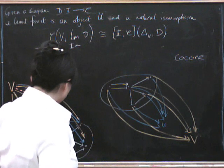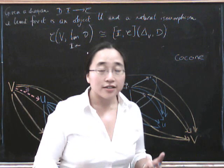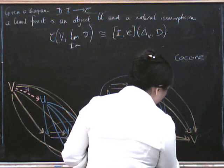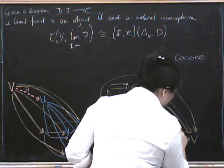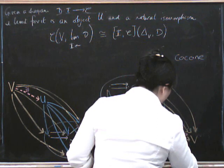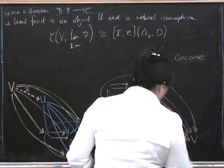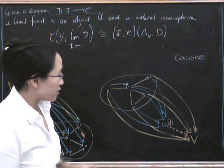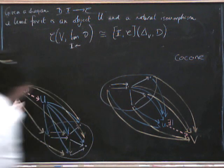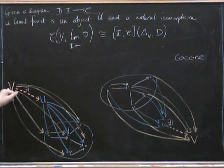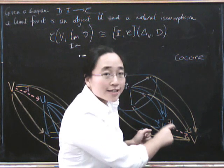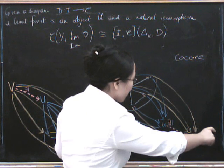And we've got to say that this other one factors uniquely through the first one, which means that there's a unique factorization going from here to here. Now, you'll notice one of the striking facts here is that this time it's going from the universal one to the other one, whereas in the limit, it was going from the other one to the universal one.